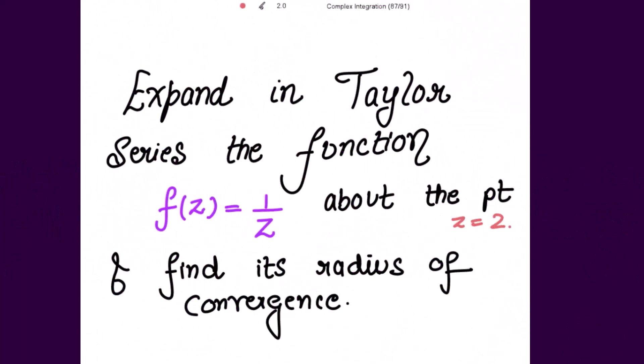We need to expand in Taylor series the function f(z) equal to 1 over z, about the point z equal to 2, and also we have to find its radius of convergence.